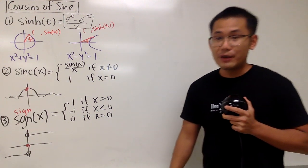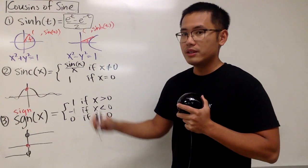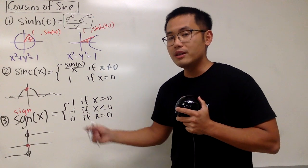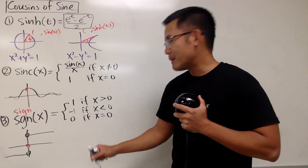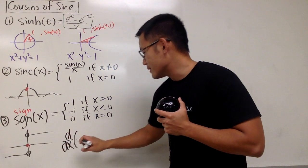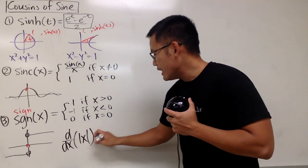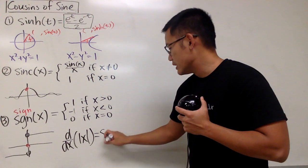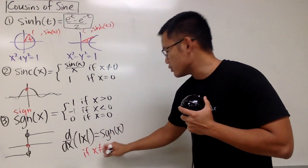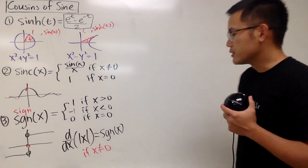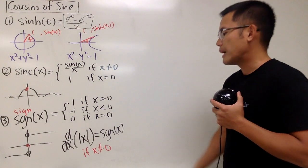What if you differentiate the sign function? You get 0. But what if you integrate it? You get the absolute value. The idea is that if you differentiate the absolute value of x, you end up with the sign of x — under the assumption that x is not 0, because you cannot differentiate absolute value when x equals 0. So if you integrate it, you get the absolute value of x, almost.